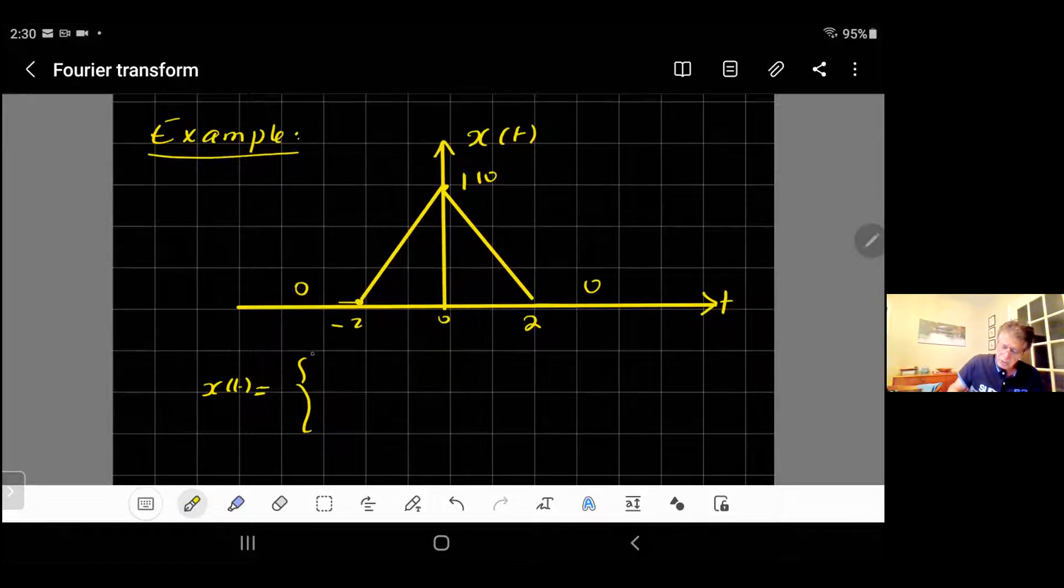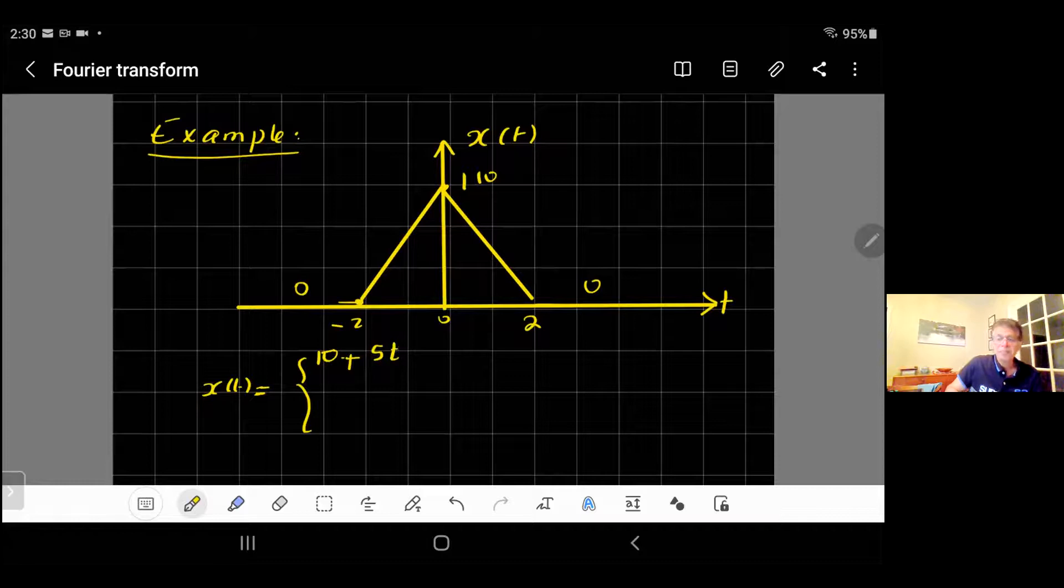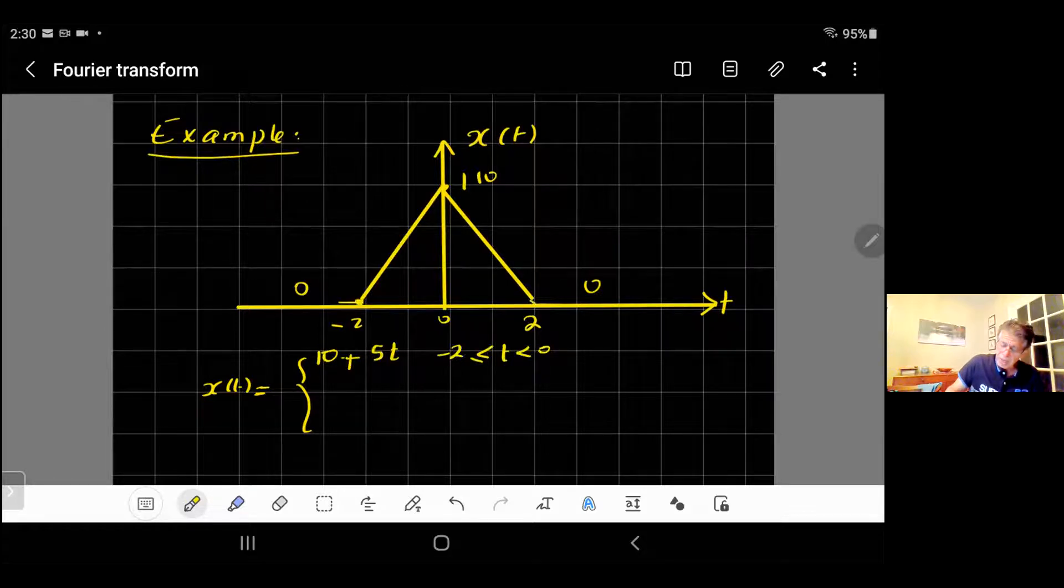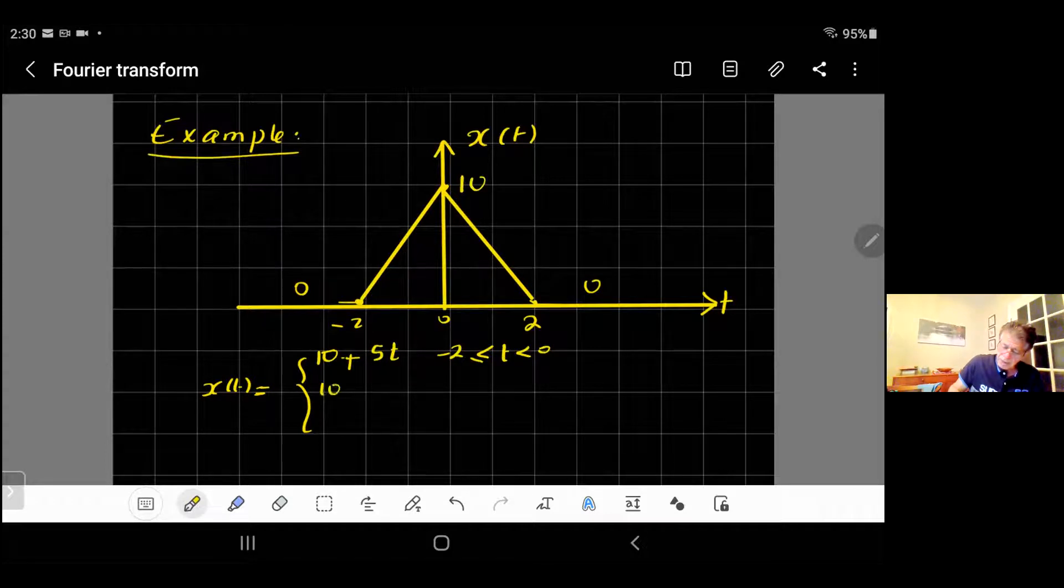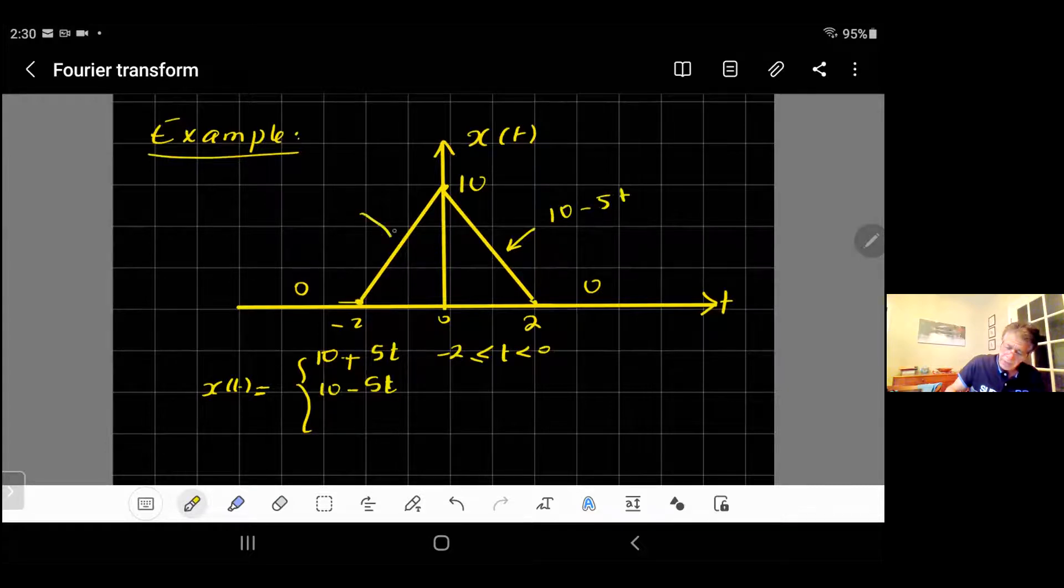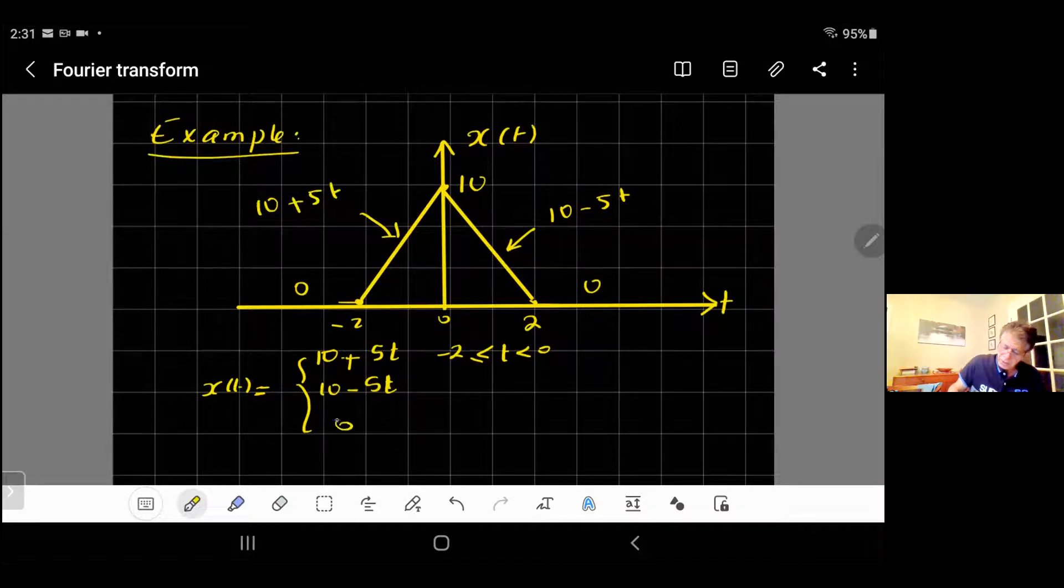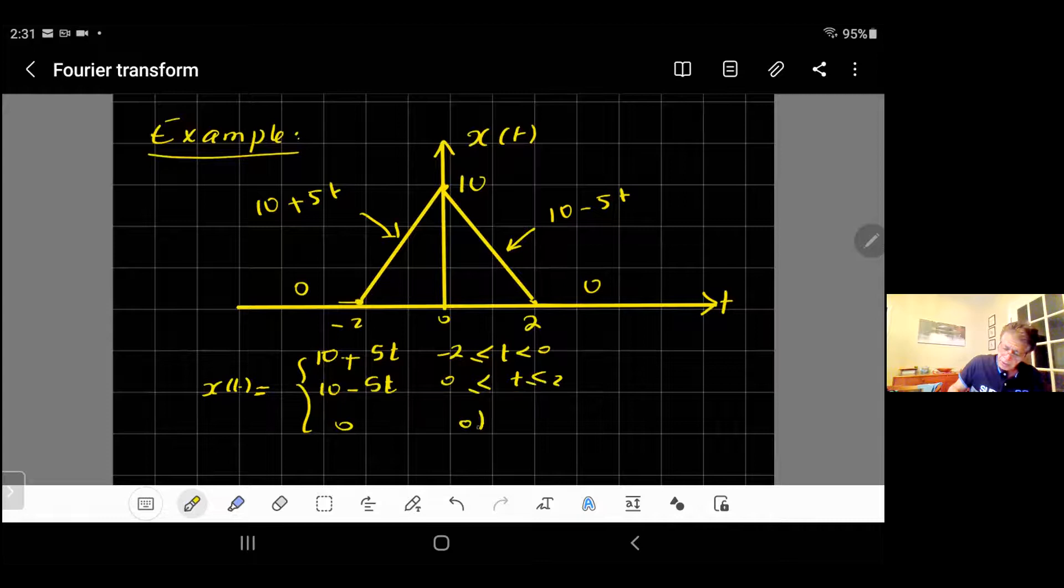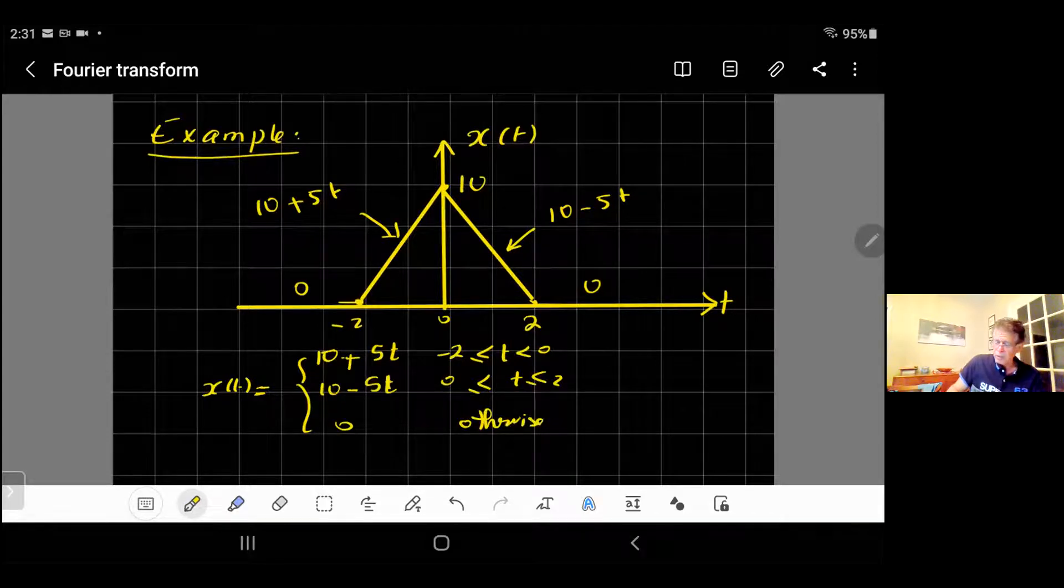x(t) has three regions. There is one from minus 2 up to time 0. It's a straight line, the y-intercept is equal to 10 and the slope is equal to 10 over 2, which is 5. So 10 plus 5t. And that's when t is between minus 2 and 0. There's another line here between 0 and 2, which is 10 minus 5t, the slope is negative. And 0 otherwise.